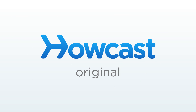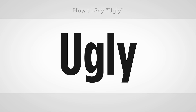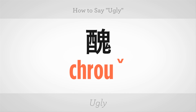How to say ugly in Mandarin Chinese? 醜. Ugly. 醜. 醜. Now you try.